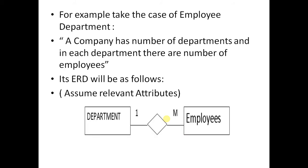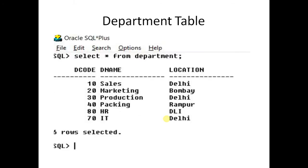For example, let us take the case of employee and department. A company has a number of departments and in each department there are a number of employees. So in general, the following ER diagram will be created consisting of two entities — department and employees — with a one-to-many relationship.